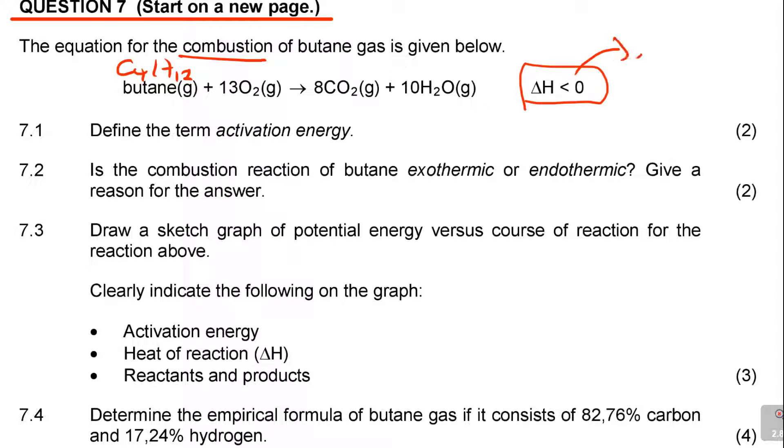When you see that less, what do you know? It's exothermic. It releases heat, so you can see that it's negative. Delta H is negative.